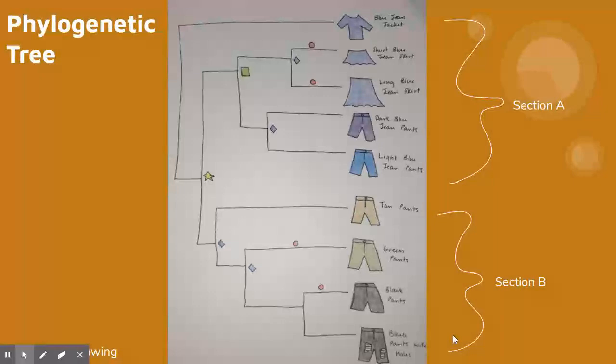In this tree, the blue jean jacket represents the outgroup because it is not closely related to the other articles of clothing in the tree.